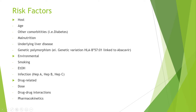Other host-related risk factors include comorbidities such as diabetes, malnutrition, underlying liver disease, as well as genetic polymorphism. A perfect example of genetic polymorphism is the testing of the genetic variation in a gene highly linked to hypersensitivity to the HIV medication abacavir. Studies have shown that individuals who have this genetic variation are more prone to moderate to severe liver injury after taking abacavir for HIV therapy.